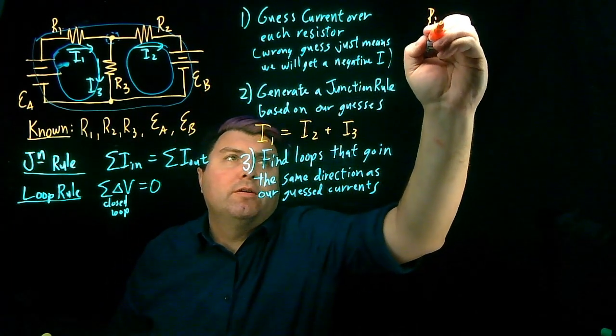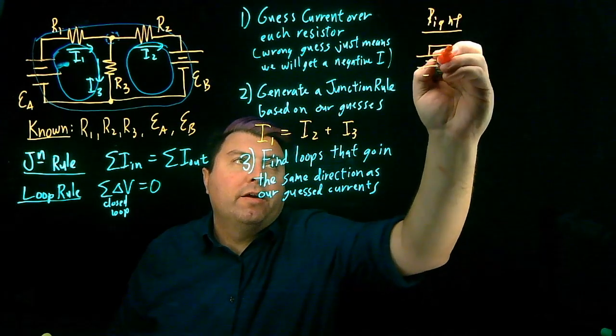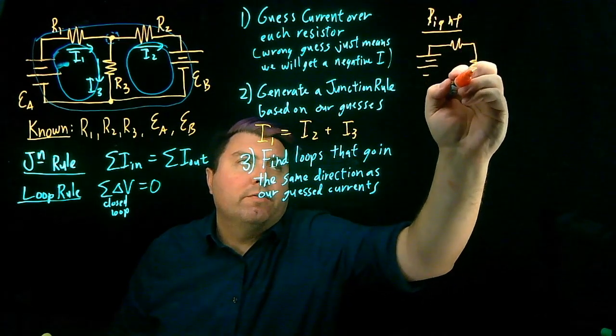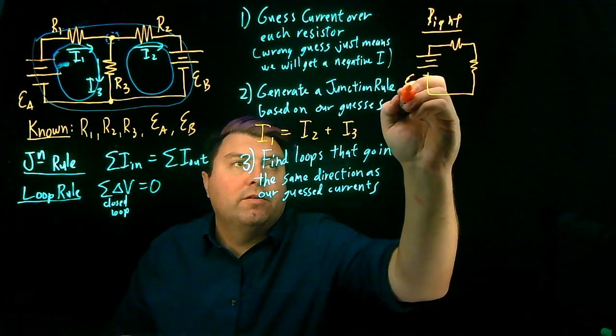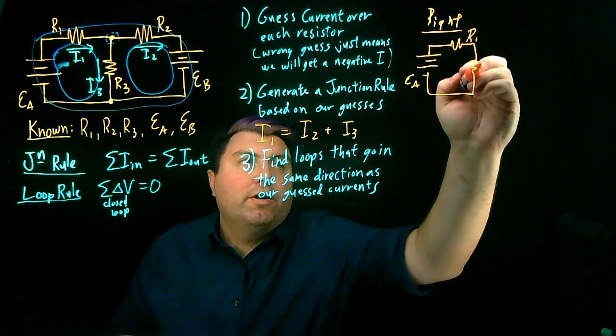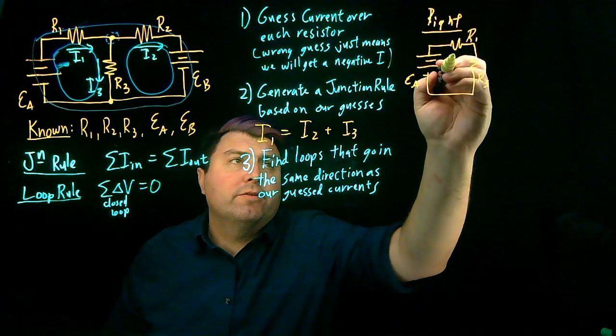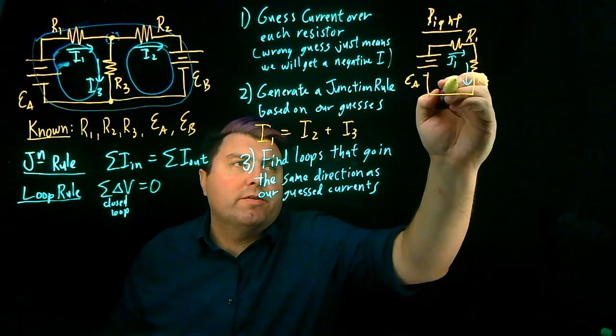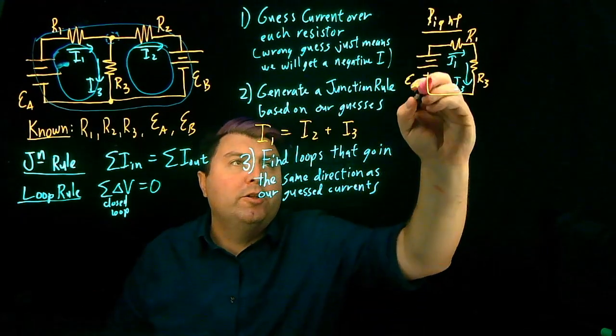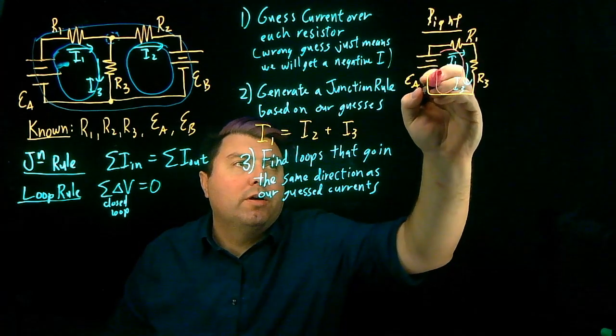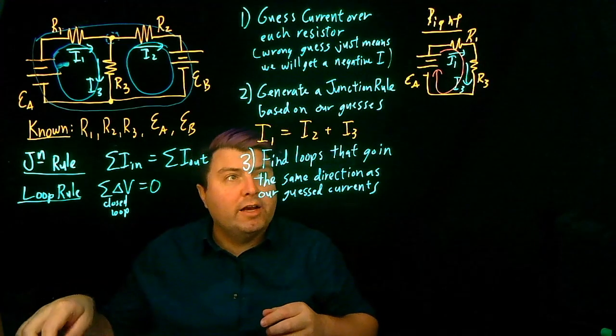So let's look at each of these individual loops as if they were just the only elements themselves. For this right loop, we have our battery EA, resistor 1, resistor 3. We've guessed the directions, this is I1, we've guessed the directions, this is I3. So we can see we have a pretty clear and pretty easy loop in which to build, that we can build a loop that goes along in this clockwise direction.